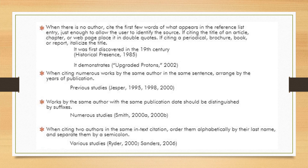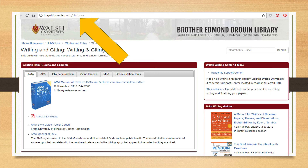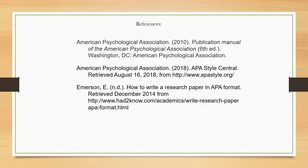This guide was adapted from an old Pathfinder developed in print format, along with examples from the APA Style Guide and pointers adapted from E. Emerson at headtoknow.com/academics/write-research-paper-APA-format. For additional support or questions about APA as a writing style and formatting your research paper, visit us at library.walsh.edu or check out our Writing and Citing Lib Guide. Additional support can be found in the APA 6th Edition Style Manual or on the APA's website at www.apastyle.org.